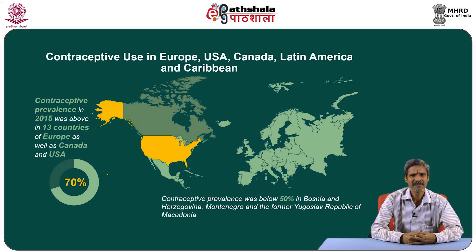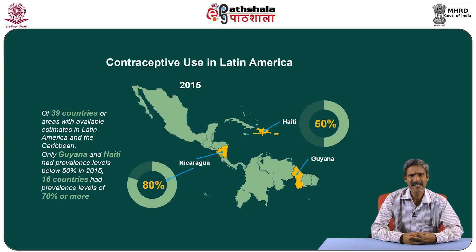In Europe, contraceptive prevalence was above 70 percent in 13 countries as well as Canada and the United States of America, while three European countries had prevalence below 50 percent. Most countries in Latin America and the Caribbean have at least a moderate level of contraceptive use. Of the 39 countries from that region, only Guyana and Haiti had prevalence below 50 percent, and 16 countries had prevalence of 70 percent or more, with Nicaragua recording the highest level at 80 percent.